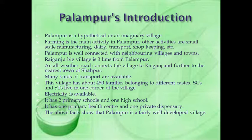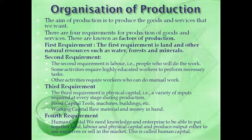The above facts show that Palampur is a fairly well-developed village. Moving ahead — organization of production. The aim of production is to produce the goods and services that we want. There are four requirements for production of goods and services. These are known as factors of production.